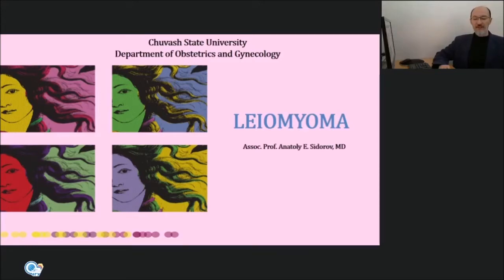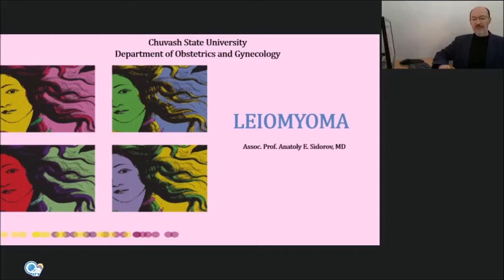Uterine enlargement due to pregnancy, functional ovarian cysts, and leiomyomas are among the most common causes in adult women. Endometrioma, mature cystic teratoma, acute or chronic tubo-ovarian abscess, and ectopic pregnancies are other frequent causes. Most pelvic masses in this age group are benign, but malignancy rates increase with age.